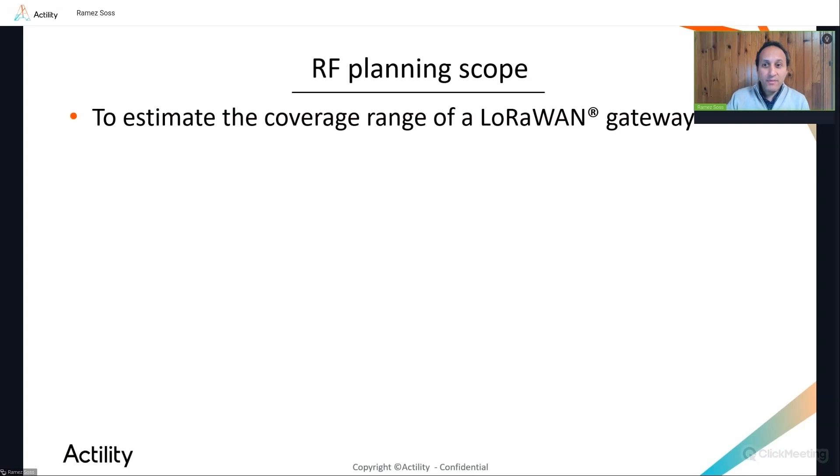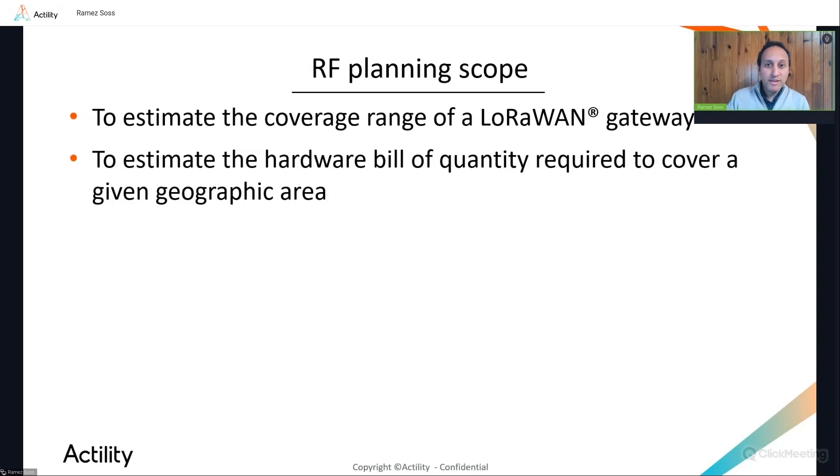And then, after assessing the coverage of a single gateway, you would need to estimate how many gateways are required to cover the area of interest. And this is typically required at pre-sale stage to establish a bill of quantity and compute your total cost of ownership. And then, you would need to choose the optimal placement for your gateways, relying on RF simulation tools to predict the coverage provided by your future gateways before proceeding to the rollout phase.